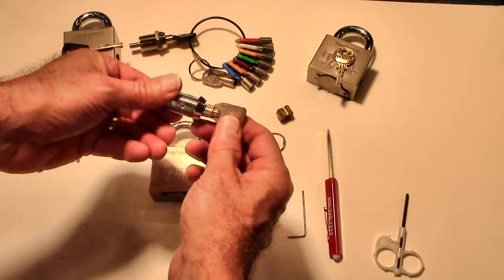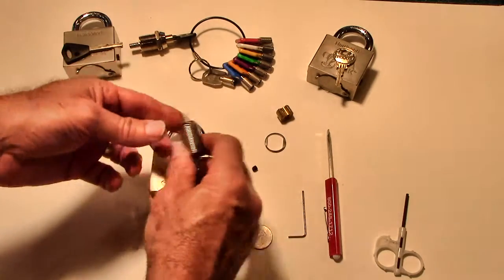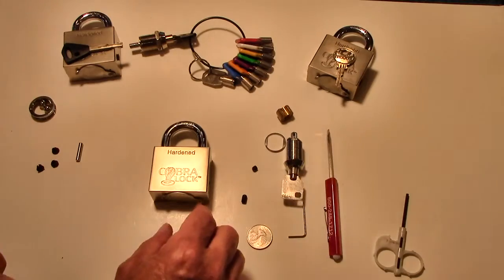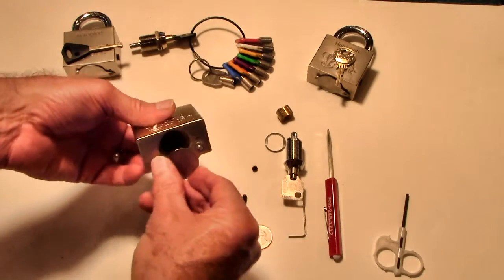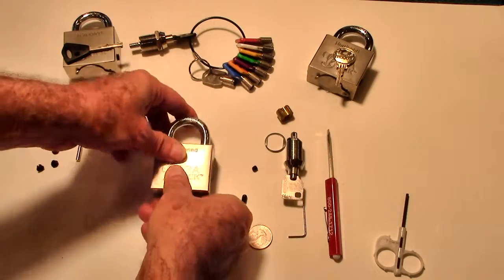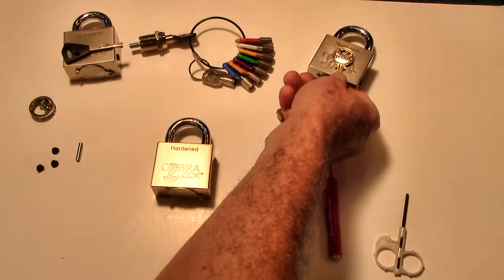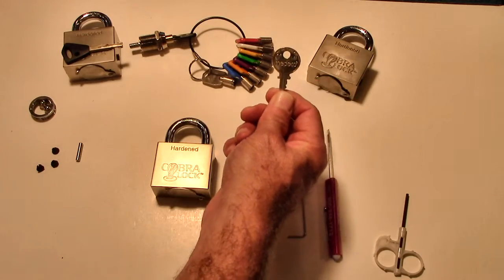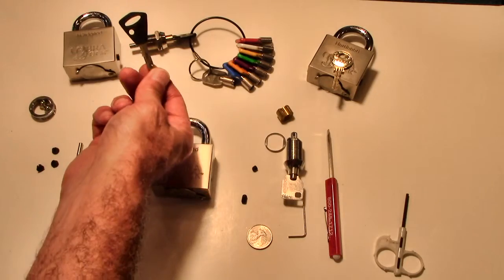This is the Cobra 7. The padlock body that we're going to use has already been disassembled so we're going to show you how to assemble it using the Cobra 7 cam lock. It can also accept the Cobra Matic 7, the Medico cam lock, and the Abloy cam lock.